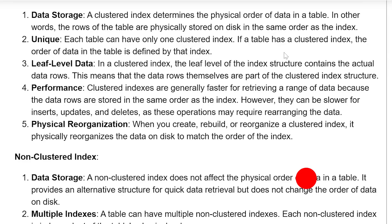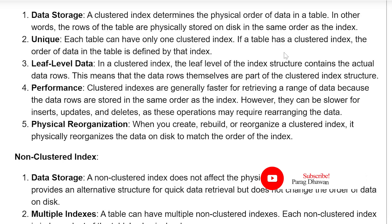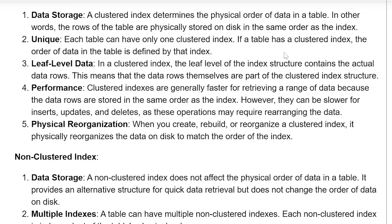Leaf level data. In a clustered index, the leaf level of the index structure contains the actual data rows. This means that the data rows themselves are a part of the clustered index structure. Performance: clustered indexes are generally faster for retrieving a range of data because the data rows are stored in the same order as the index.